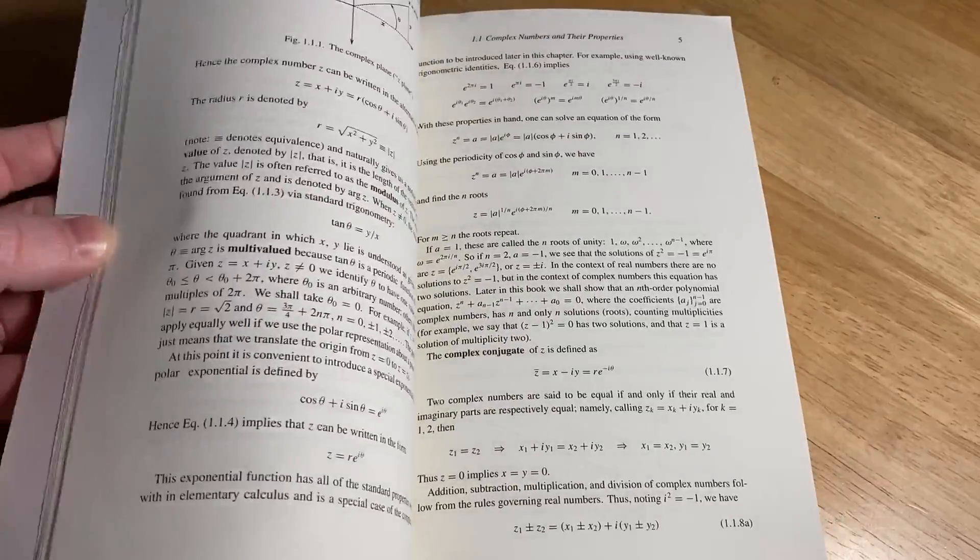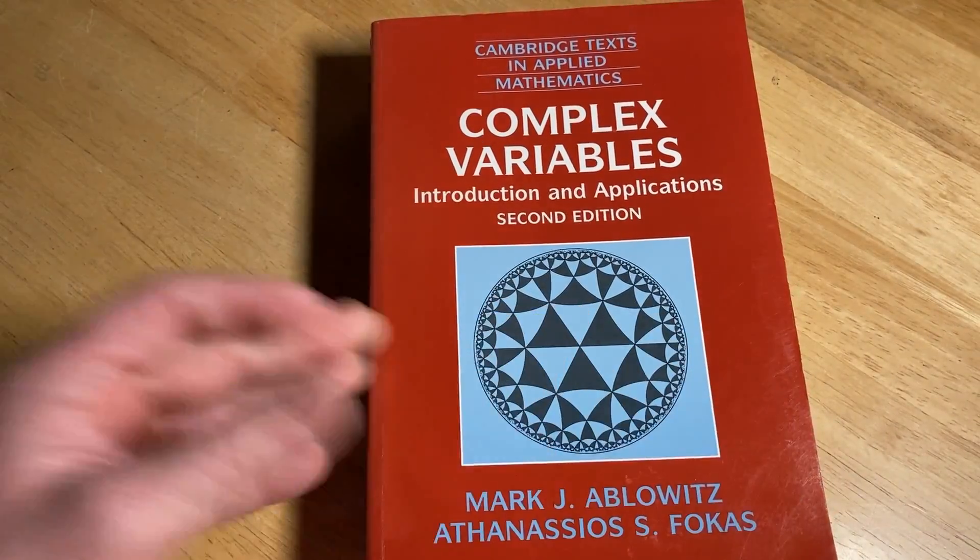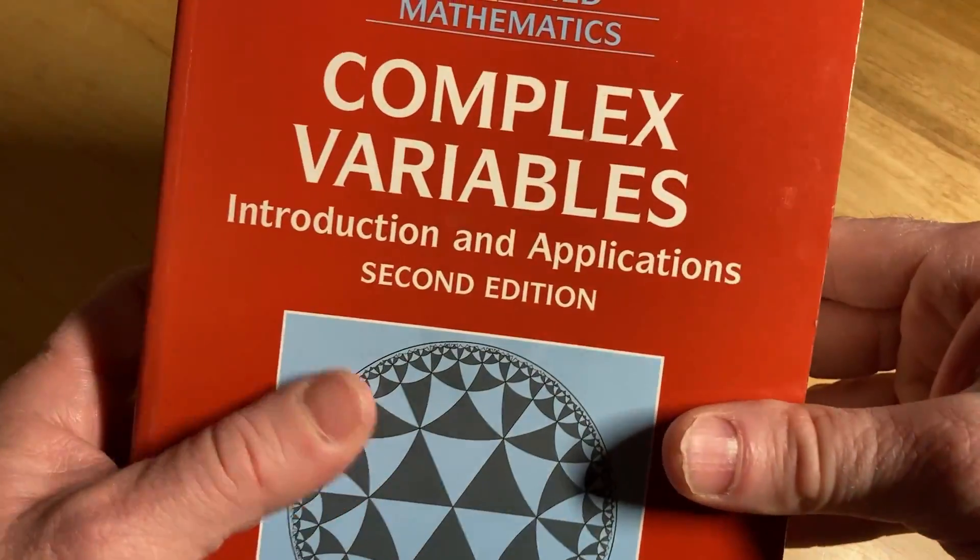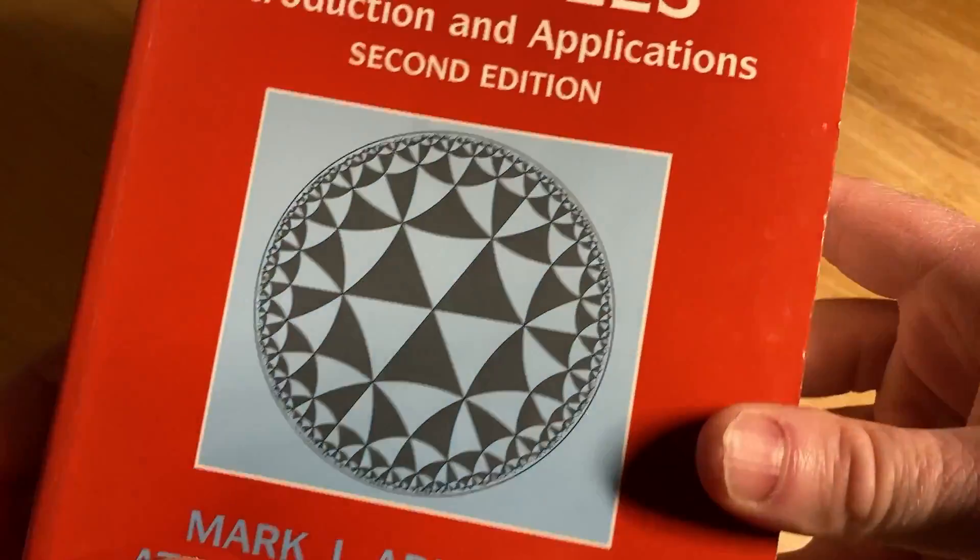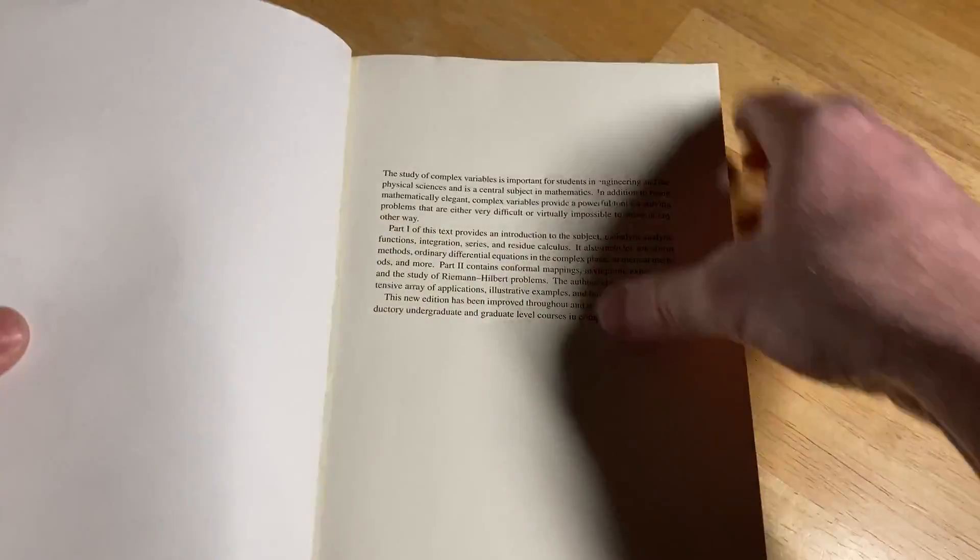This book has a lot of content that other books on complex variables don't have. So let's just go through it and see what's inside it. It's called Complex Variables Introduction and Applications, the second edition, by Ablowitz and Fokas. This is a fantastic book.